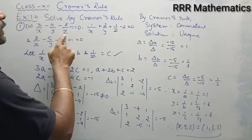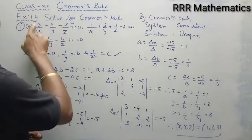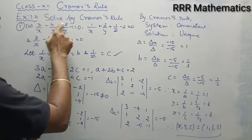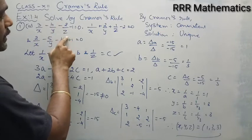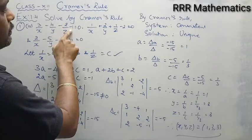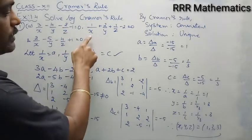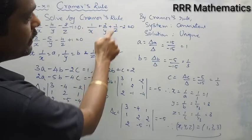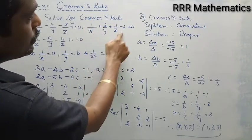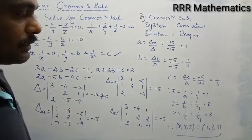When you substitute back: 3/1 minus 4/3 minus 2/3 gives 1, and this minus 1 gives 0. Similarly, 1/1 plus 2/3 plus 1/3 gives 2, minus 2 equals 0. The solution satisfies all equations.